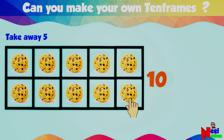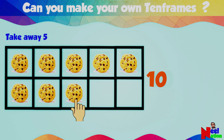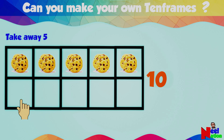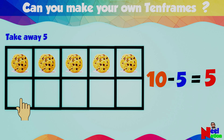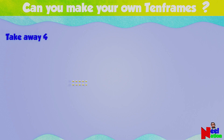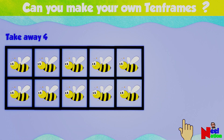You have 10 cookies in the 10 frame. I ate one, two, three, four, five — five of them. How many cookies are left in the 10 frame? Five — that's right! When you take away five from 10, you get five. Ten minus five equals five.